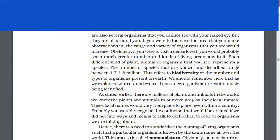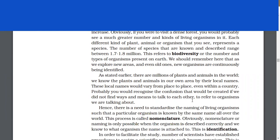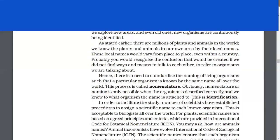The number of species that are known and described range between 1.7 to 1.8 million. This refers to biodiversity or the number and types of organisms present on earth. There are millions of plants and animals in the world. We know the plants and animals in our own area by their local names. These local names would vary from place to place.